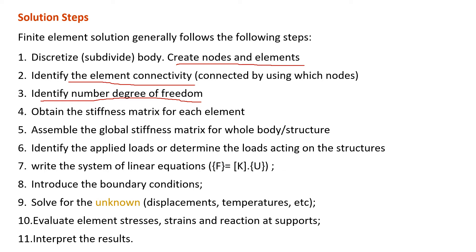Number 4 is to obtain the stiffness matrix for each element. Once we have the stiffness matrix for each element, we can assemble it into a global stiffness matrix for the whole structure. The next step is to identify the applied loads in our system — either a point load, a traction load, or body force. Once we have the force and the stiffness matrix, we can write our system of linear equations: F equal to KU.